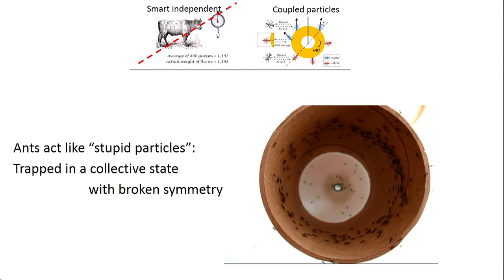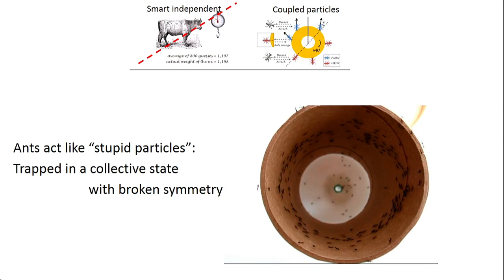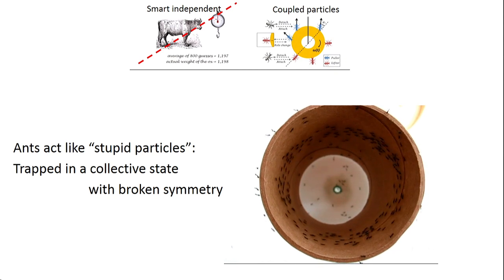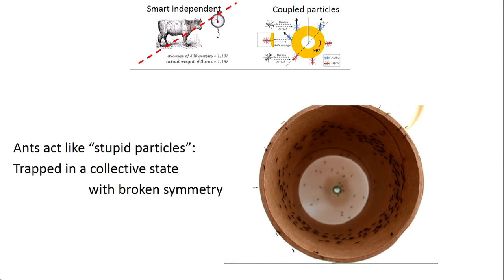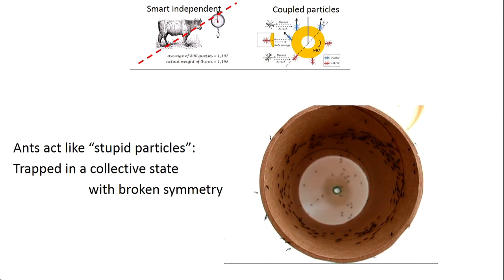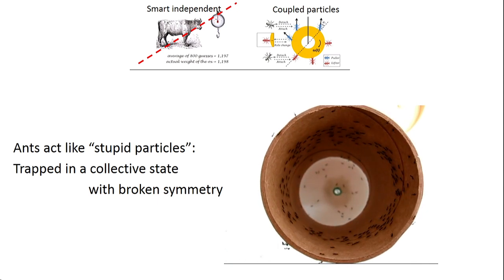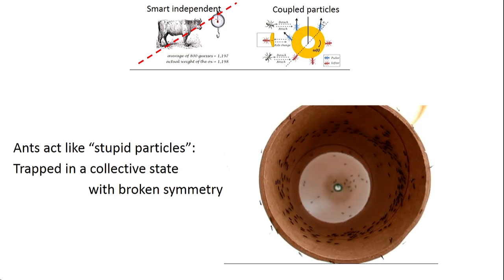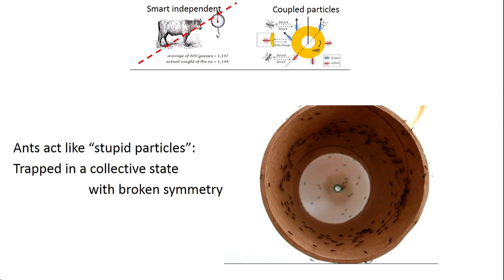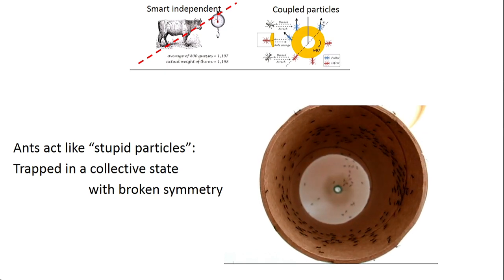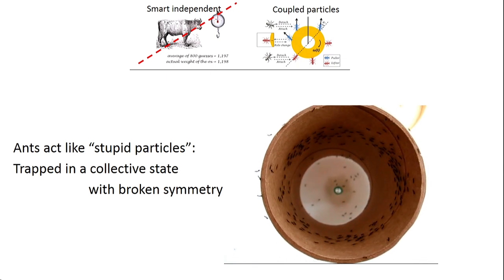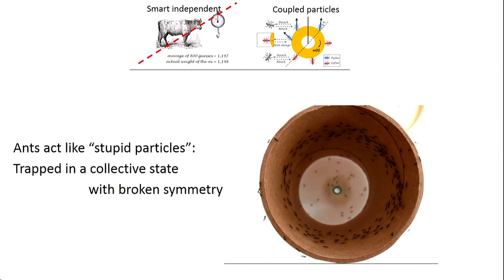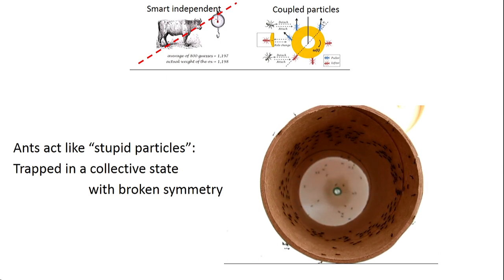It seems that our observations fit with ants that act like stupid particles — they don't really know where home is, they just go with the flow, and they're trapped in some collective state with a broken symmetry. This is actually the same species in different behavior: we put a toilet paper roll around the ant entrance. They can escape easily, but they're trapped in this collective state where they go around and around. This maintained itself for 10 days, during which no ant died. If an ant got tired, she went back to the nest and another replaced her. It's really a collective state.